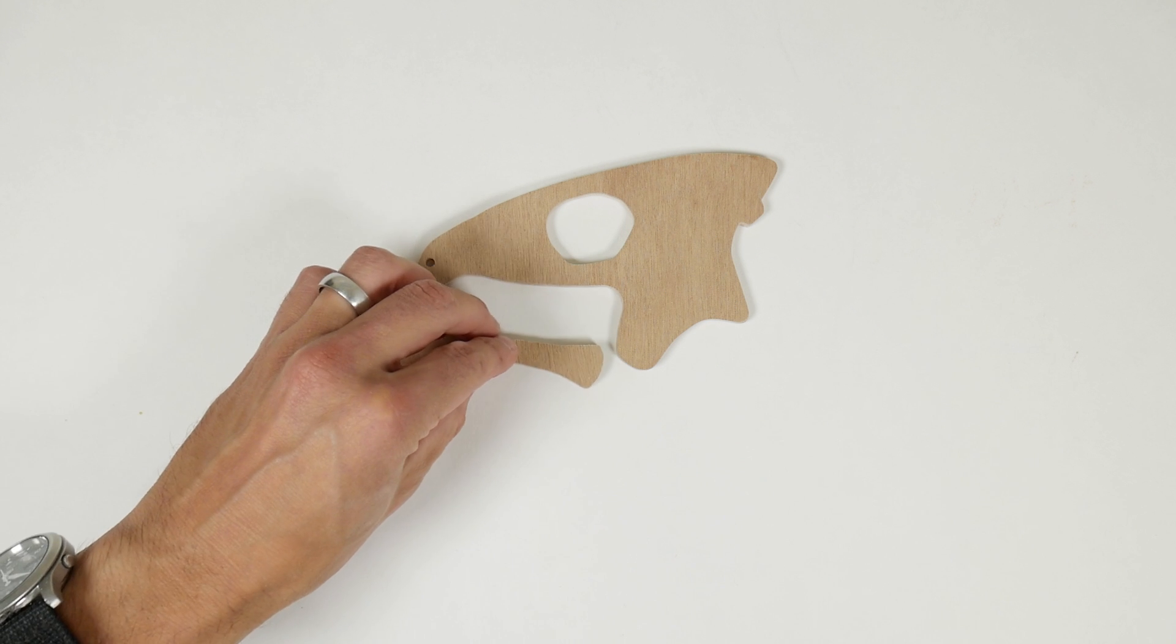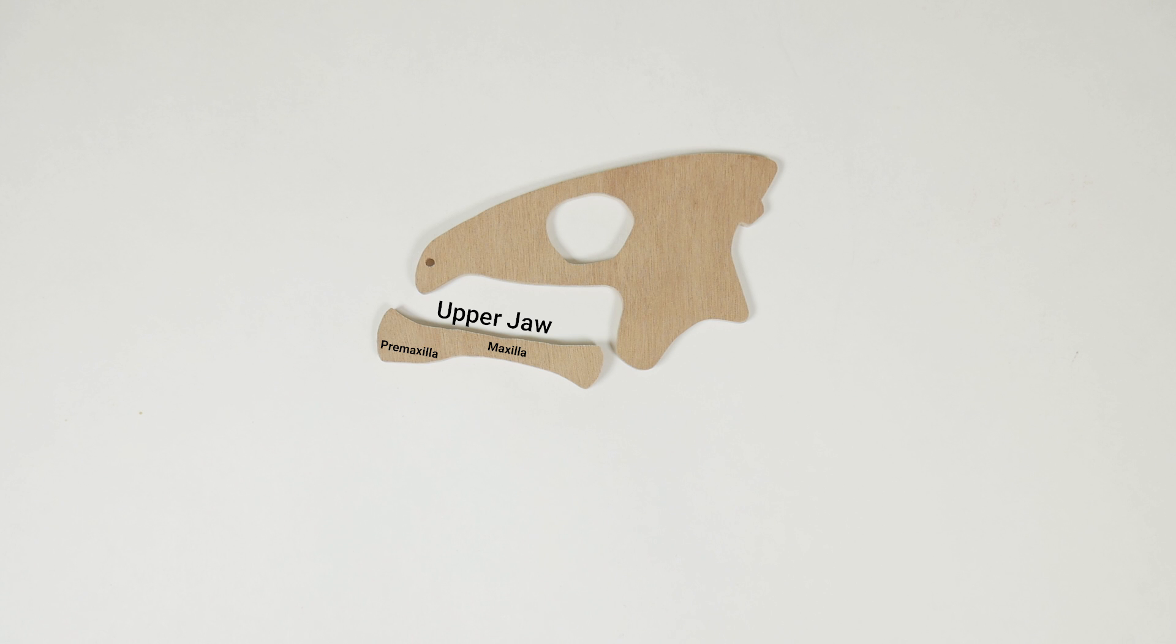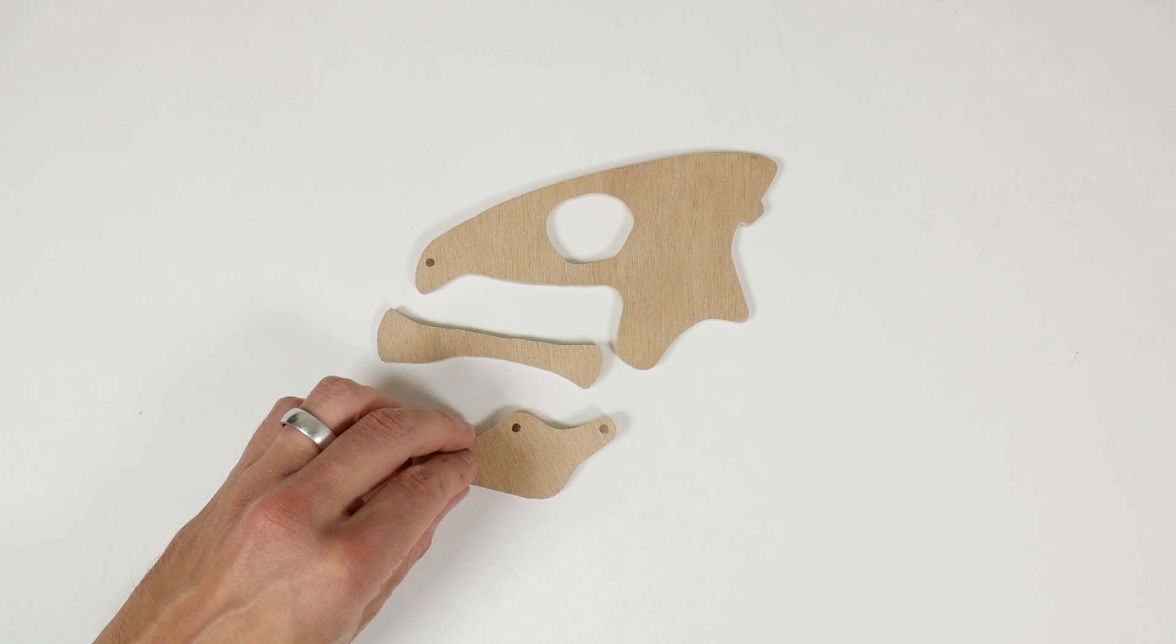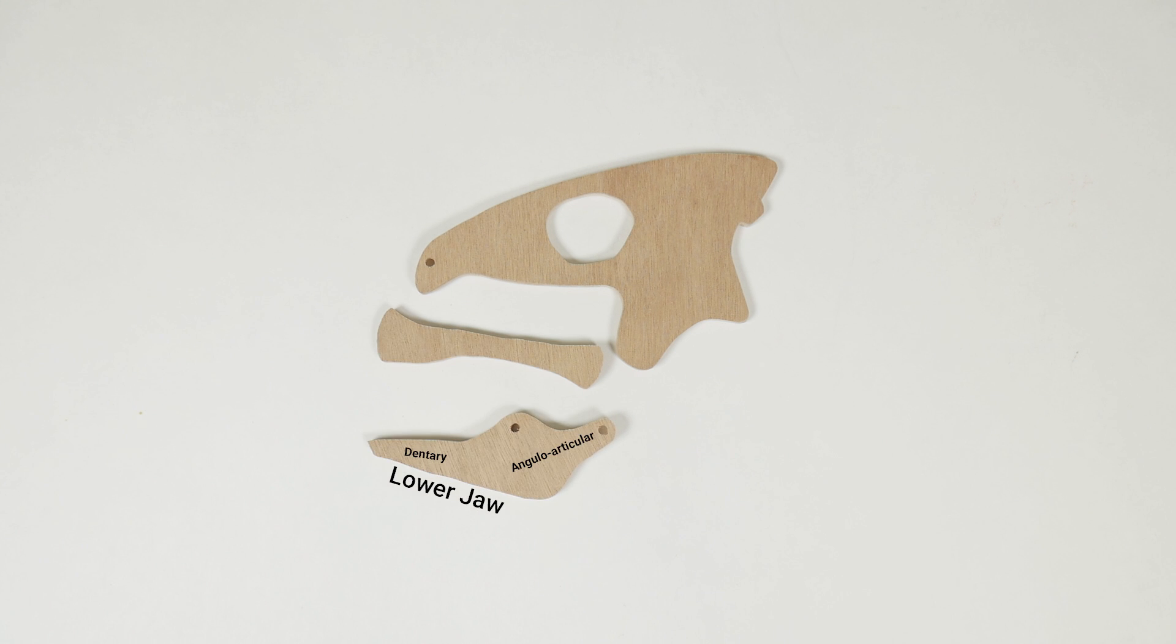The upper jaw is actually two bones, the maxilla and premaxilla. In some fish the premaxilla can extend out from the maxilla, but in this model they're a single piece. The lower jaw is composed of the dentary and angular articular bones. The upper and lower jaws are connected via the maxillomandibular ligament.